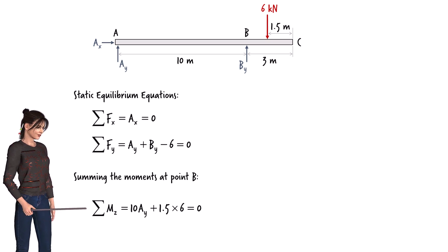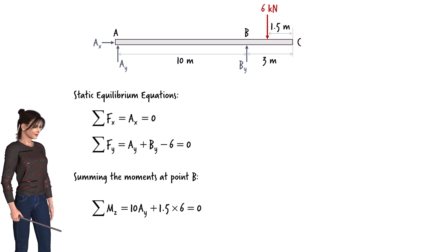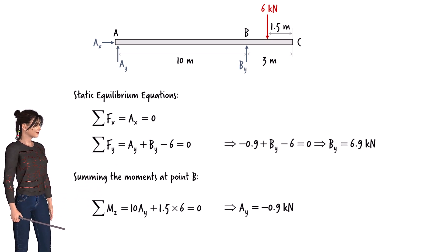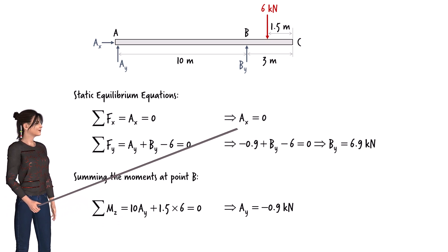Solving the moment equilibrium equation for Ay, we get the vertical reaction at A. We can then solve for By using the second equilibrium equation. And the first equation gives us Ax equals 0.